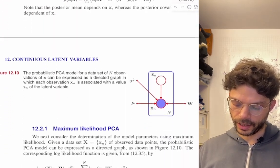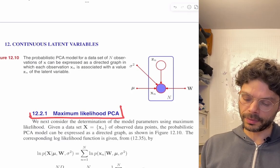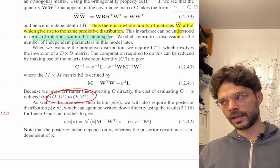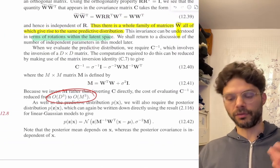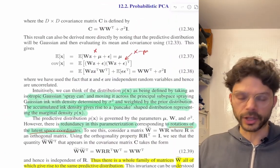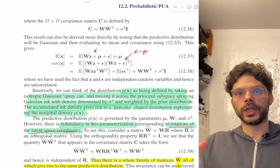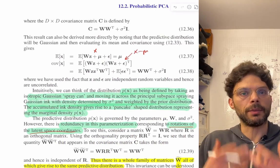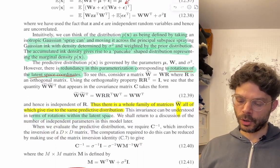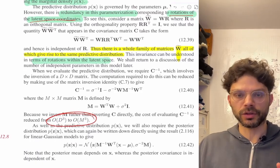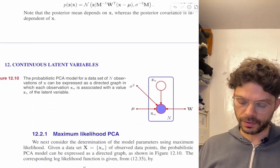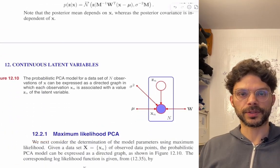Next time we're going to talk about maximum likelihood for PCA. Hopefully this gives you a sense of the probabilistic view of PCA and the latent variable approach to capturing data — why we do that, trying to break down correlations into being produced by latent variables in simple ways, maybe with fixed transformations that do most of the work for us. As we go through this chapter you'll get a better sense of why it's useful to think about the problem this way. Talk to you next time.